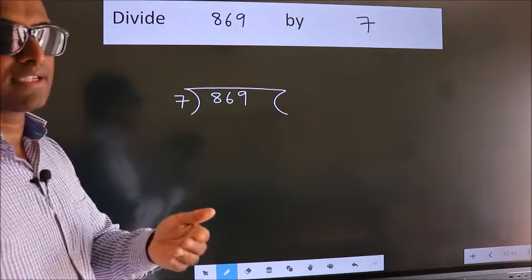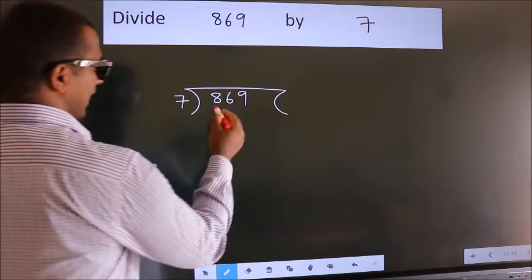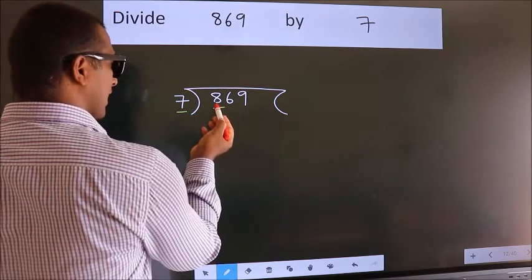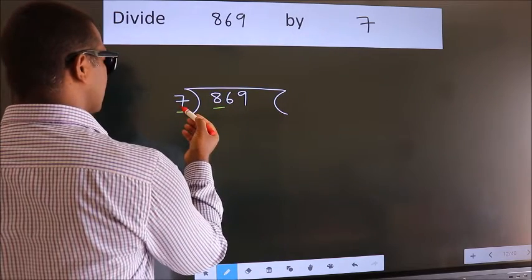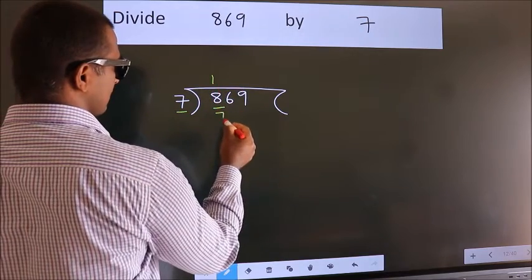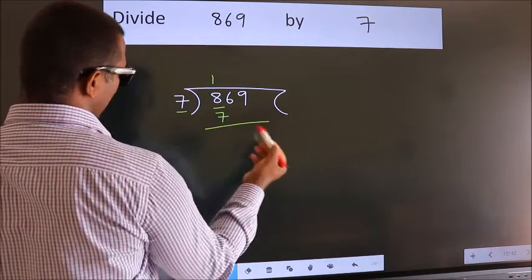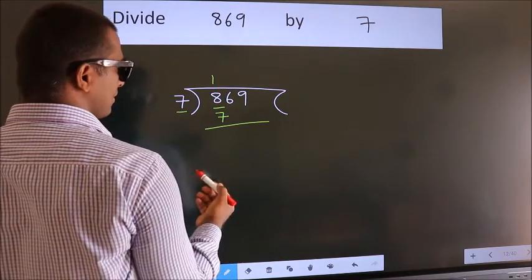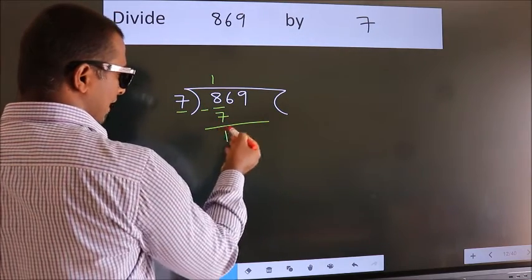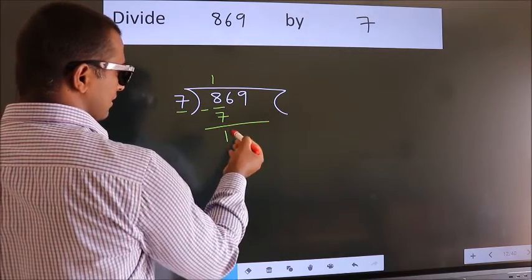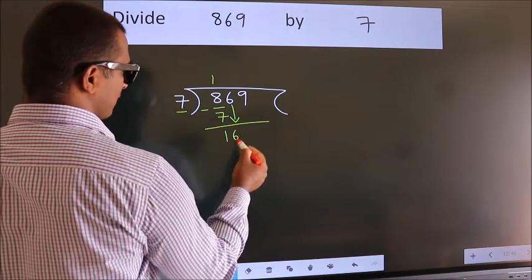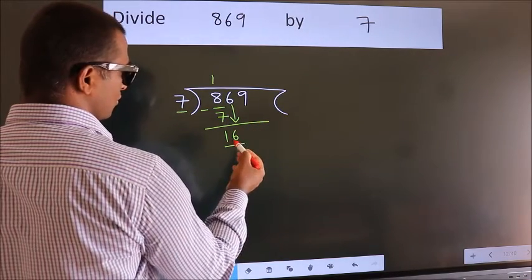Next, here we have 8 and here 7. A number close to 8 in the 7 times table is 7 ones 7. Now we should subtract — we get 1. After this, bring down the beside number. So 6 down, giving us 16.